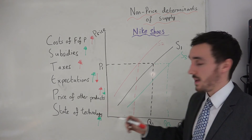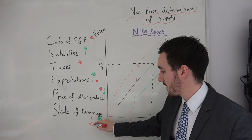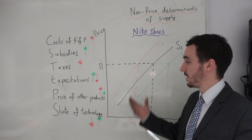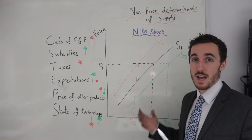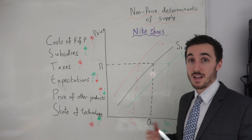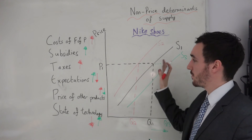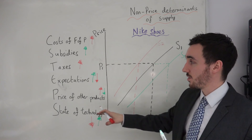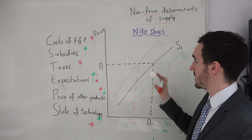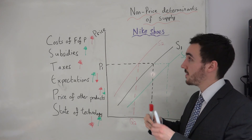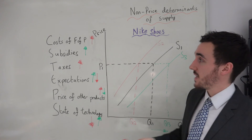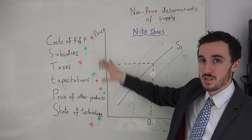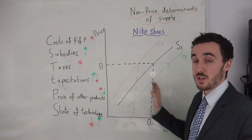In the same aspect, if our technology decreases — let's say there is a natural disaster that destroys a lot of our machinery or a virus in our computers — we suddenly have a shutdown of production that might last for a while. The price has stayed the same but now we're able to produce a lot less than before, so our supply curve shifts inwards. So with non-price determinants of supply, stick to our C-STEPS and discuss how changes in those will actually shift our supply curve to the right or to the left.